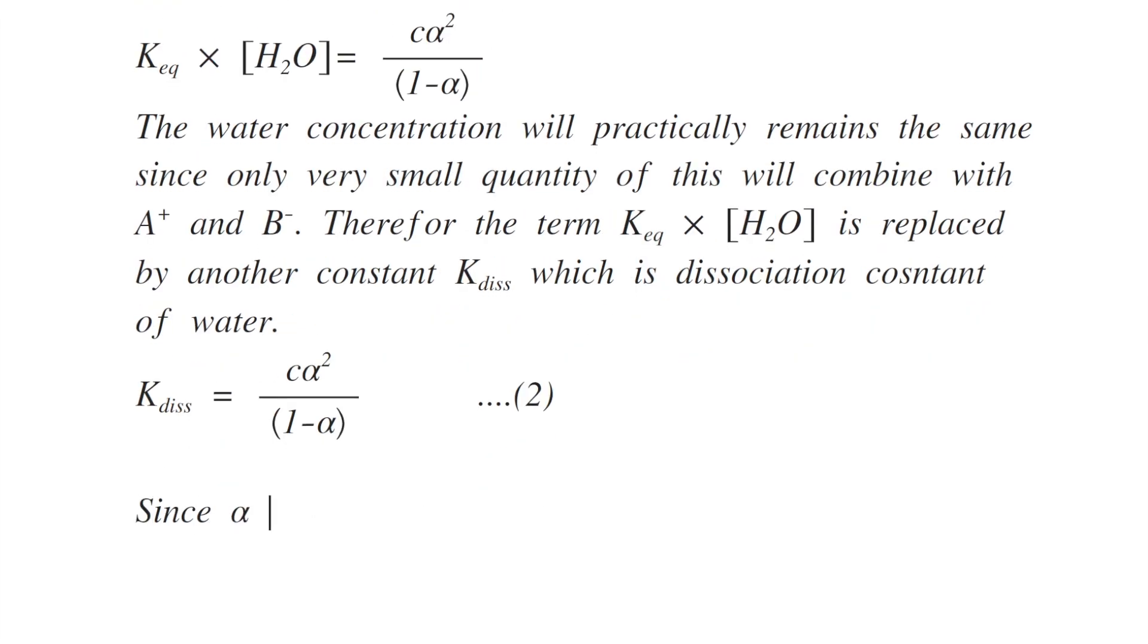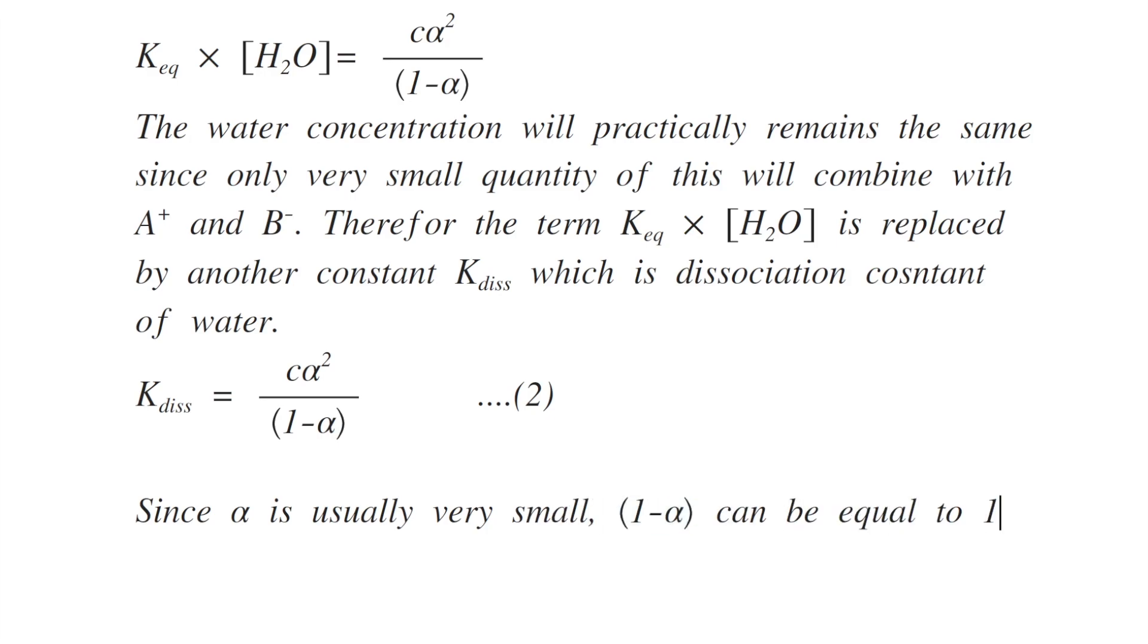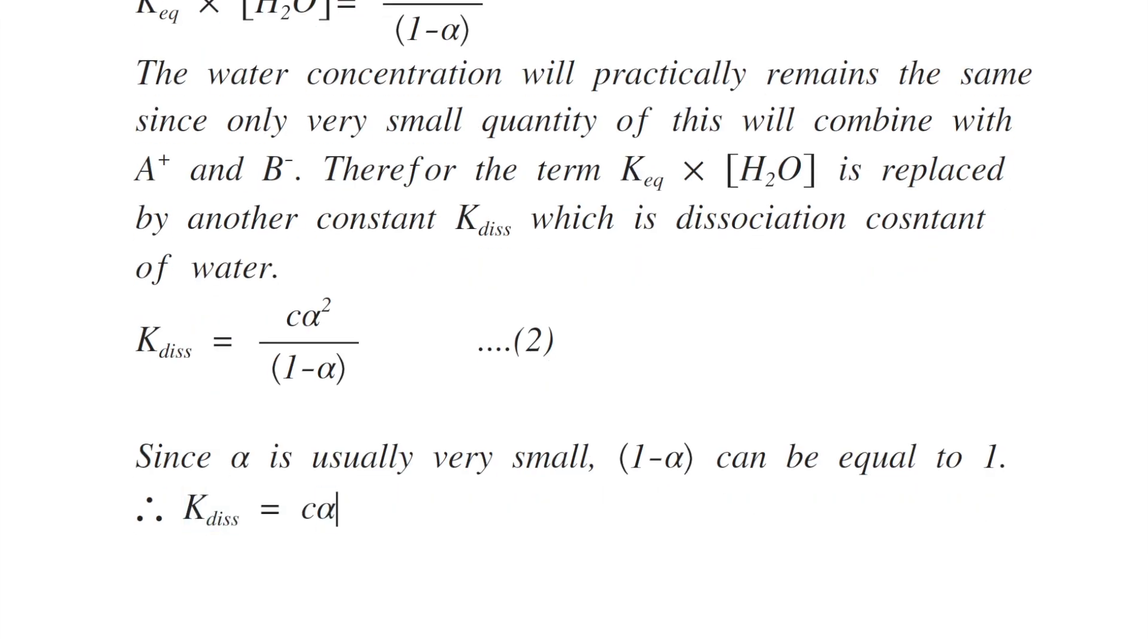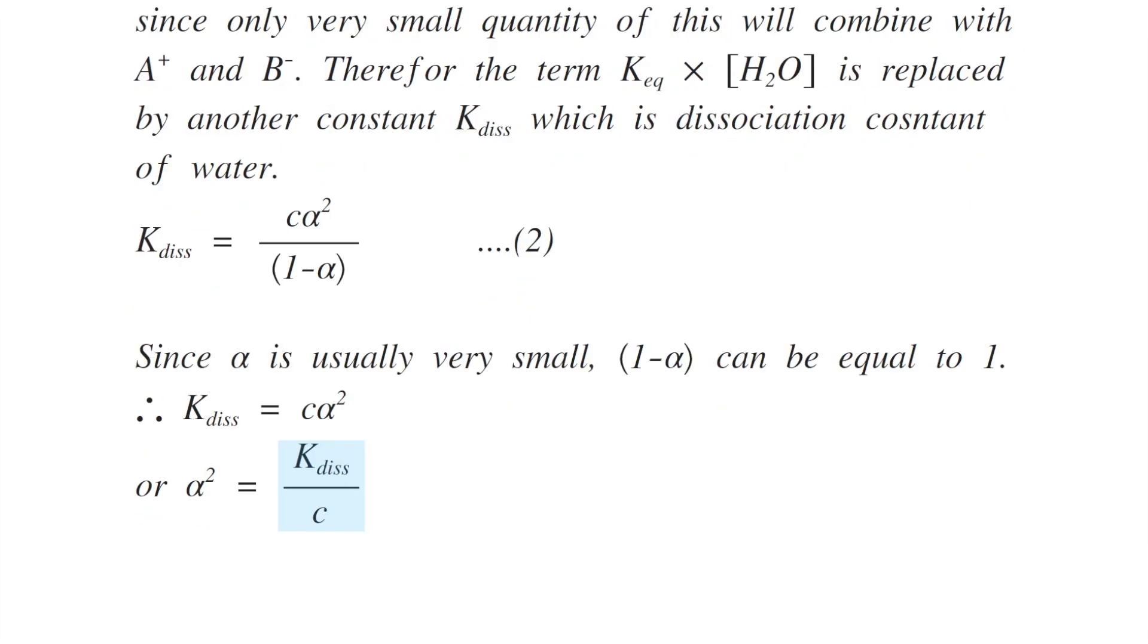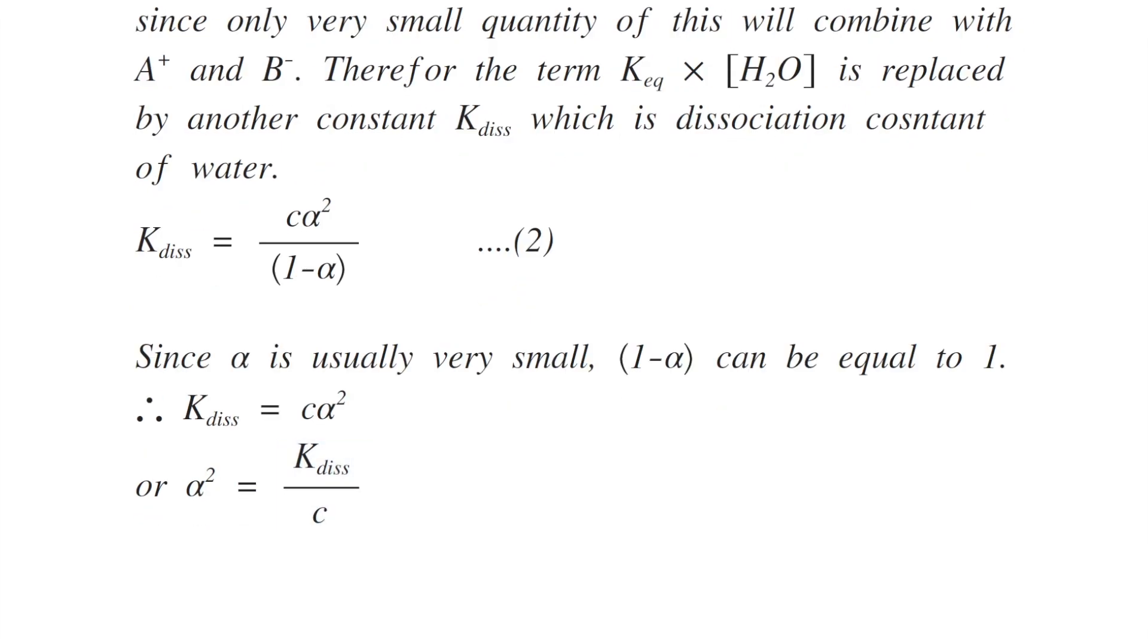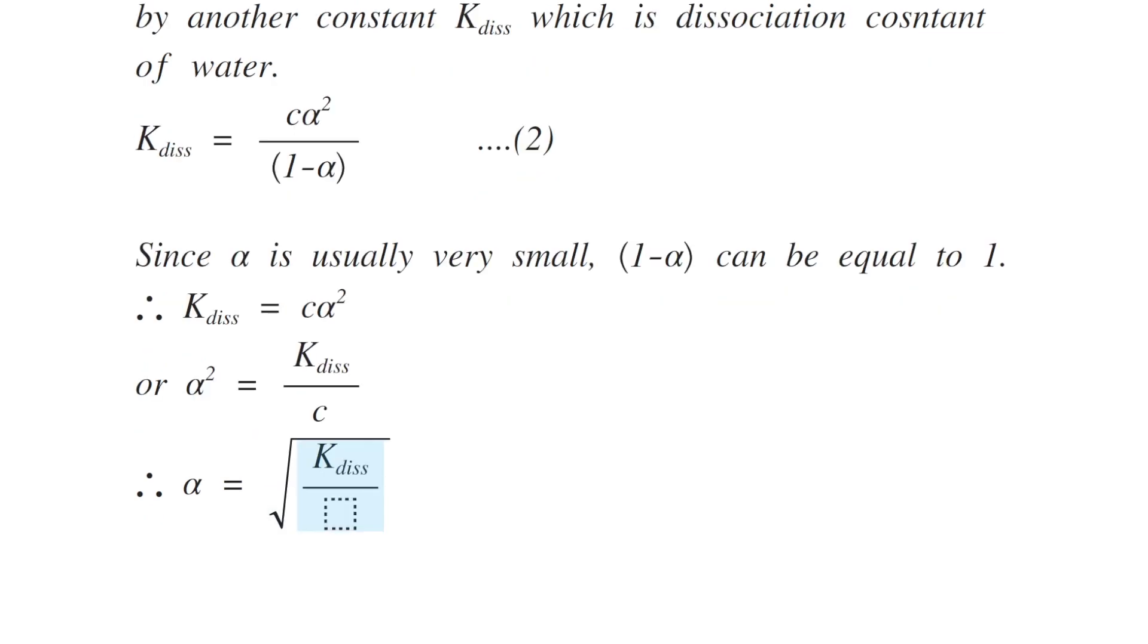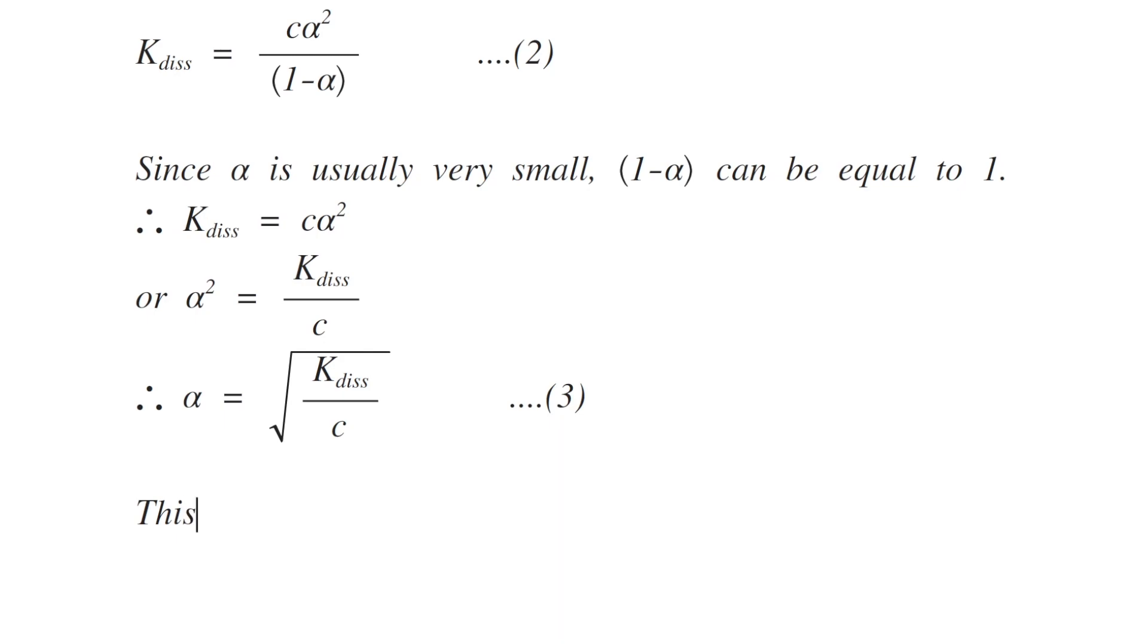Since alpha is usually very small, 1 minus alpha can be equal to 1, and K dissociation becomes C into alpha squared, or alpha can be represented as square root of K dissociation divided by C. This is known as Ostwald's dilution law.